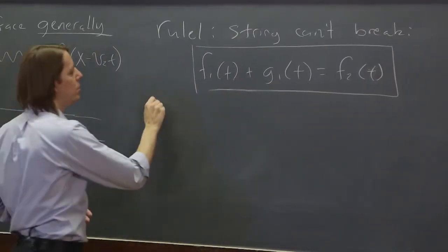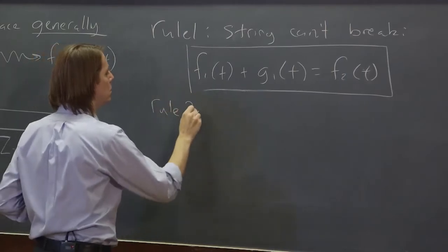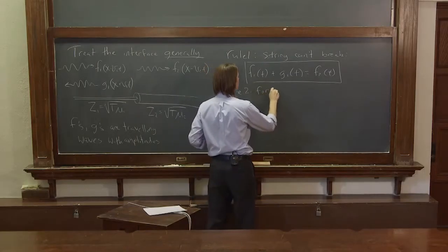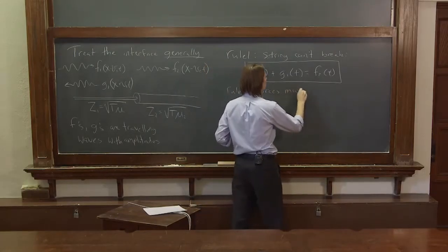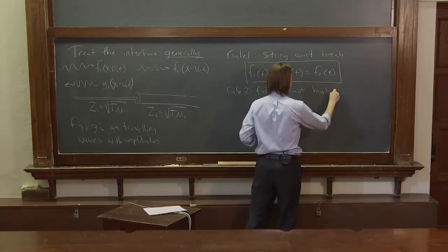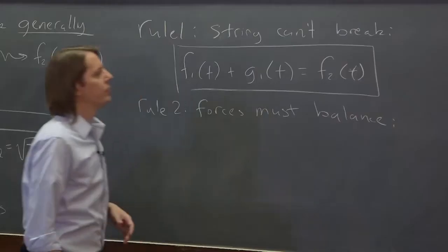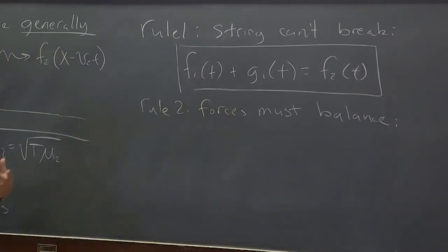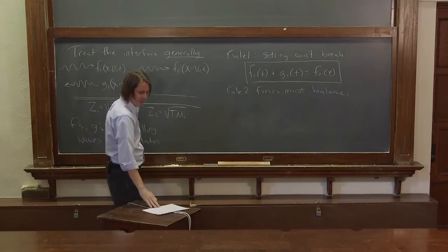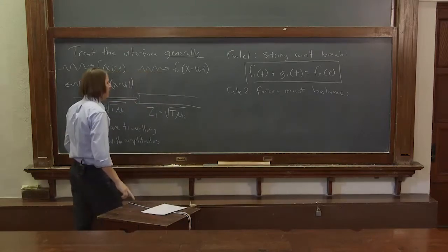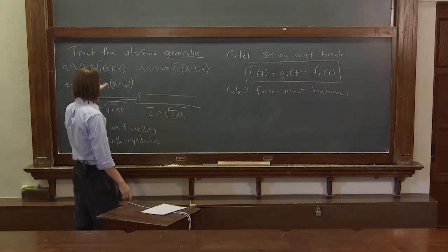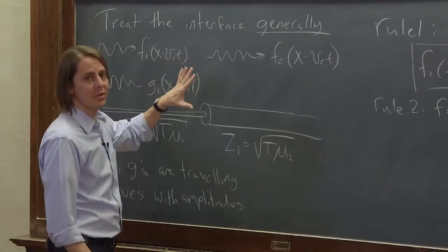And rule two is that the forces must balance. So in addition to geometrically it has to remain a string, one way you make sure that happens is that you balance the force at the interface. You don't rip the string in half. So let's think about then the force at the interface due to each one of these pulses.